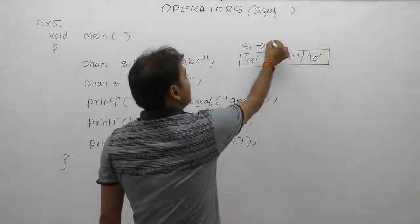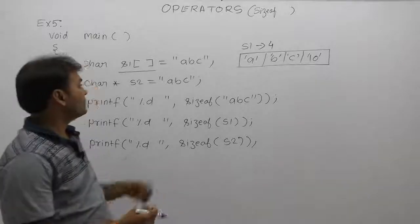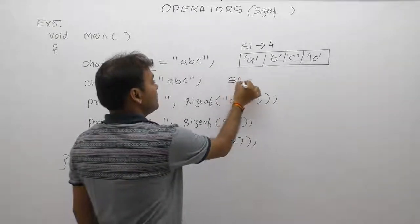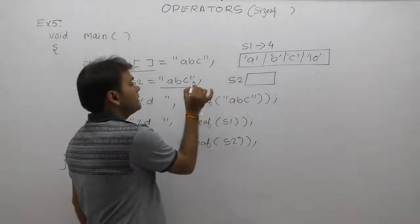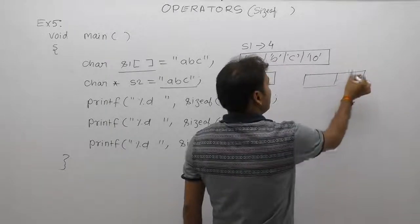Next one, s2. s2 is simply a pointer variable. Then, like in the ABC case, my string was placed separately with respect to four bytes at address something like 200.